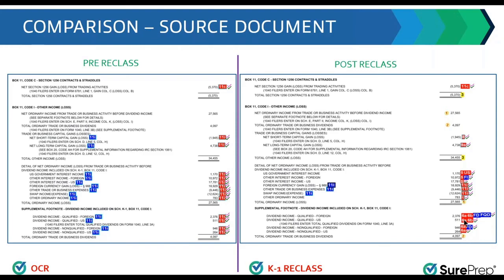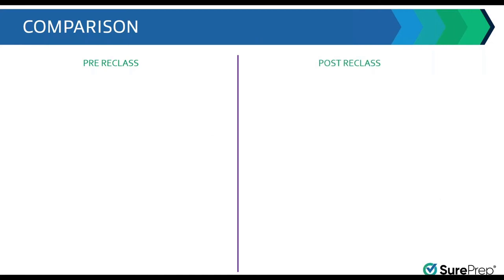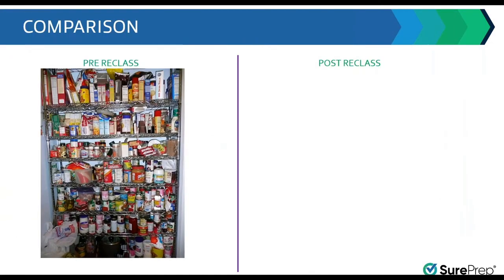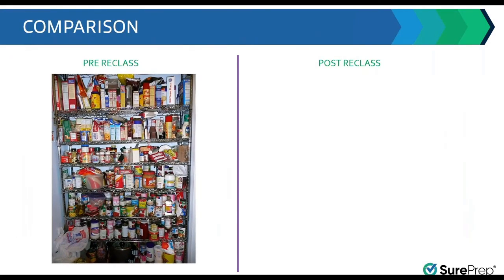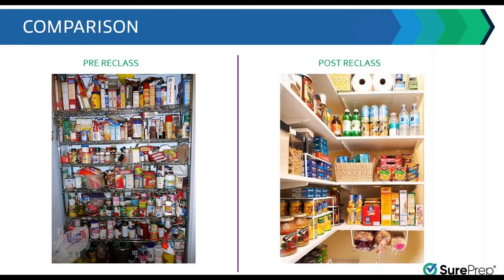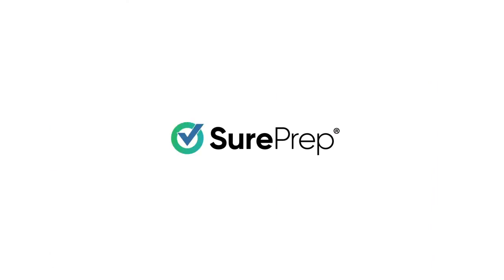For better visualization, let's look at another kind of comparison. This shelf is difficult to use — you cannot find anything easily, and once you close and reopen the shelf, you're lost again. The K-1 reclass helps you move all these items on the shelf into proper categories, so using, reviewing, and coming back to the shelf becomes very easy for you.